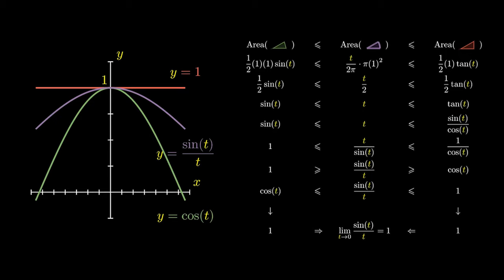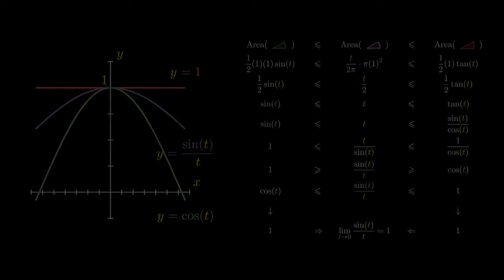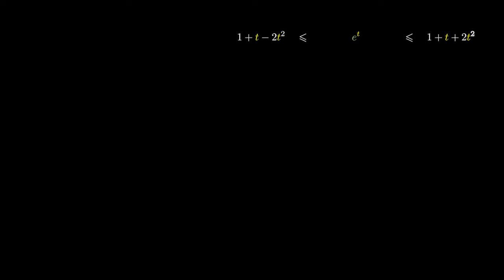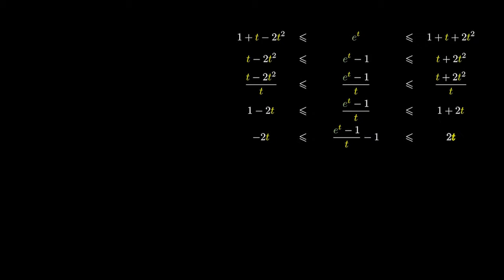We can do something similar with the exponential function. It turns out that we can lower bound and upper bound the exponential function using some polynomials. We can subtract by 1 on all sides, divide by t on all sides, simplify the left and right hand side via some algebra, and subtract by 1 on both sides.